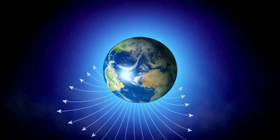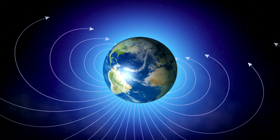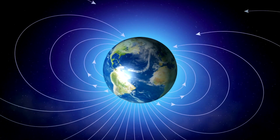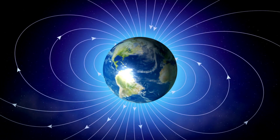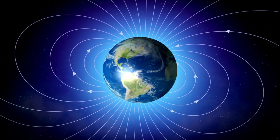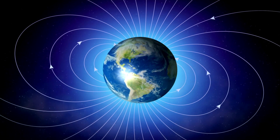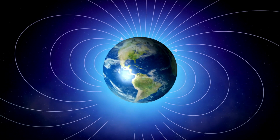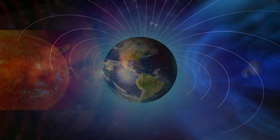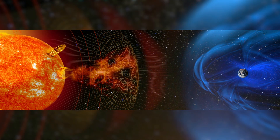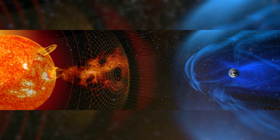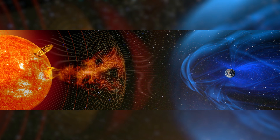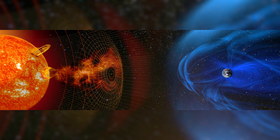The moon plays a significant role in stabilizing Earth's magnetic field. The magnetic field is generated by the movement of molten iron in Earth's core. The moon's gravitational pull helps to stabilize this movement. Without the moon, Earth's magnetic field would be much weaker, making Earth more vulnerable to solar radiation and other space weather events.